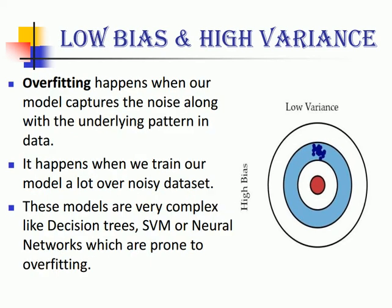Next up is low bias and high variance models. These are prone to overfitting. Overfitting happens when our model captures the noise along with the underlying pattern in data. It happens when we train our model a lot over a noisy data set. These models are very complex — like decision trees, SVMs, or neural networks — which are prone to overfitting.